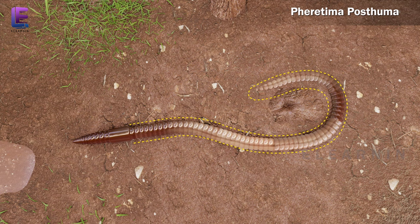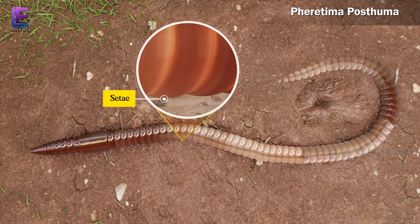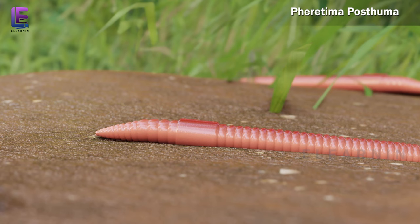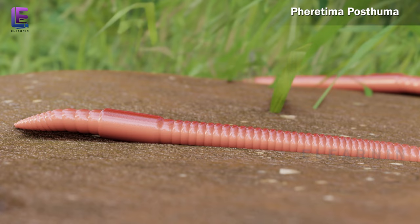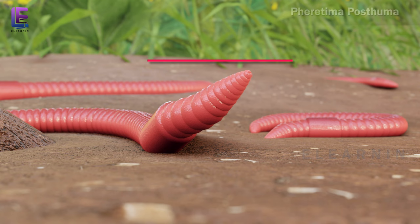Except the clitellar segments, all other segments contain S-shaped setae in the epidermal pits. Setae can be extended or retracted. Their principal role is in locomotion.